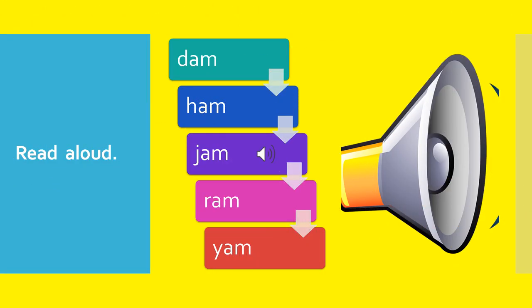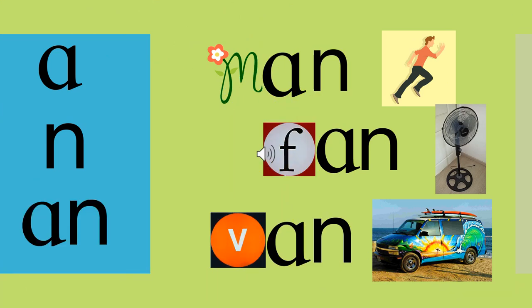Read aloud with me. D - Am - Dam. H - Am - Ham. J - Am - Jam. R - Am - Ram. J - Am - Yam. Once more: D - Am - Dam. H - Am - Ham. J - Am - Jam. J - Am - Jam. R - Am - Ram.